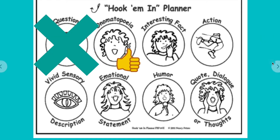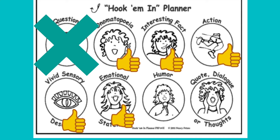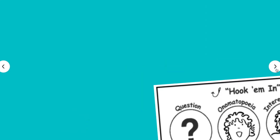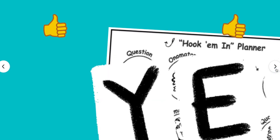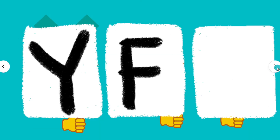What does that leave us with? You can use onomatopoeia, an interesting fact or statistic, describe an action or a scene, use vivid sensory details, give an emotional statement, tell a humorous story or an anecdotal story, use a quote or a famous quote, facts, statistics, or dialogue. You can start with some dialogue — but again, no questions. All the rest are perfectly acceptable.